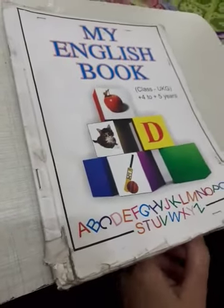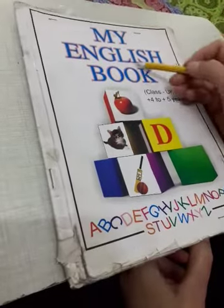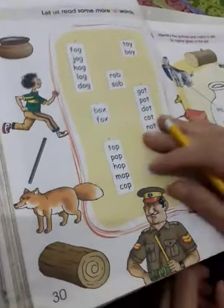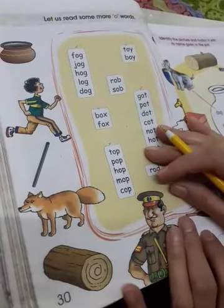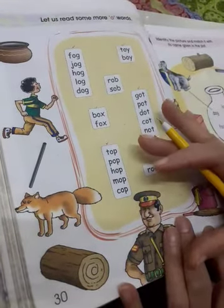Good morning children. In English subject you will take out my English book page number 30. Now what we have done? We have done O vowel words. We have completed O vowel words also.